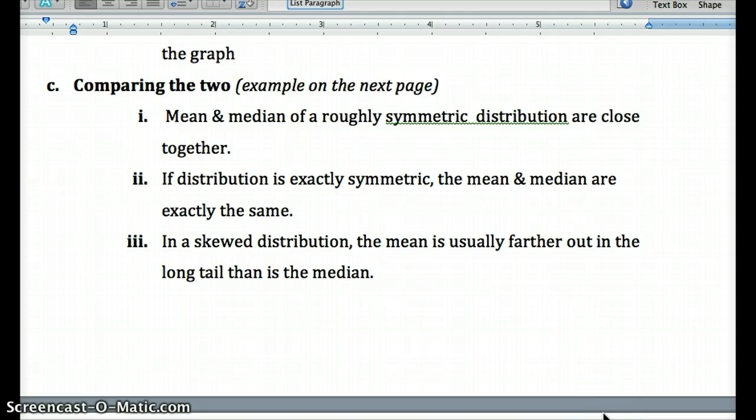So if we had a perfectly symmetric distribution, mean and median would be equal. If we have a skewed right distribution, that means the mean is being pulled to the right or larger than the median.